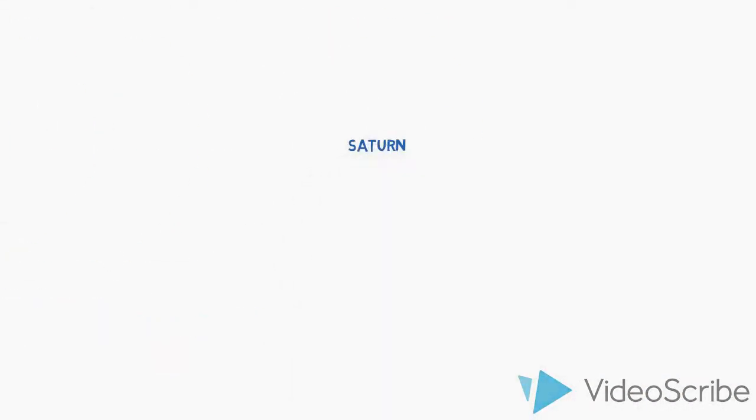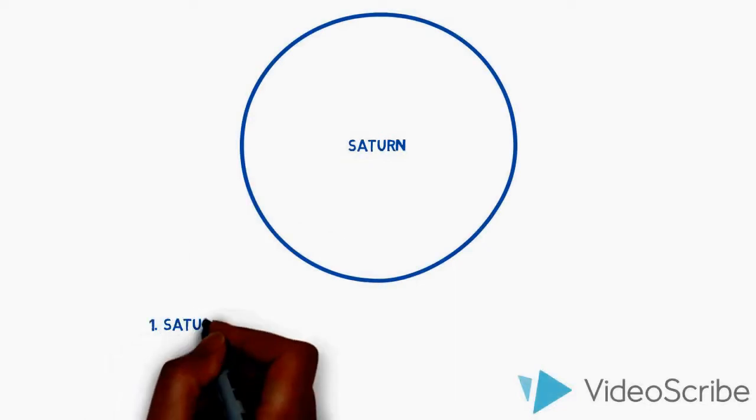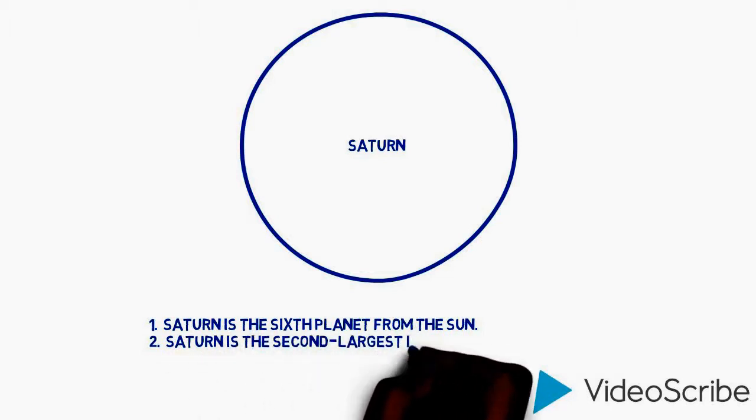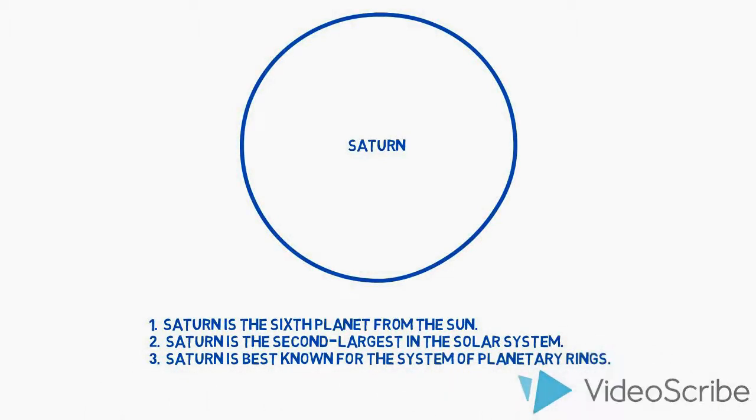Saturn. Saturn is the sixth planet from the Sun. Saturn is the second largest in the solar system. Saturn is best known for the system of planetary rings.